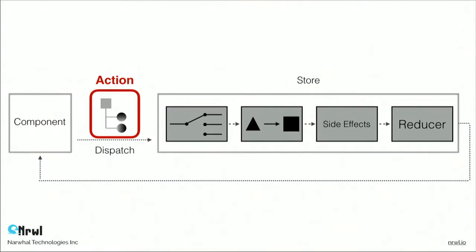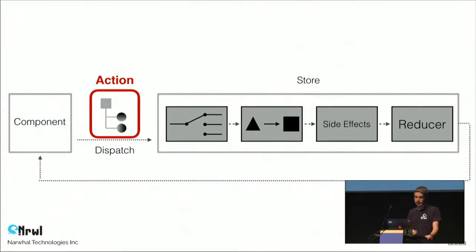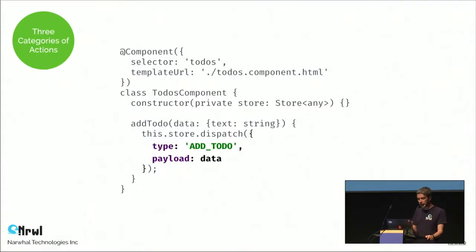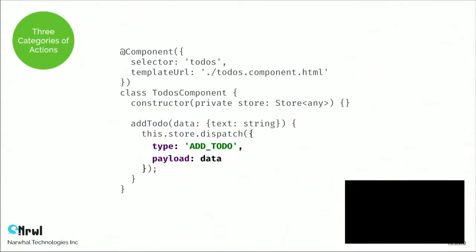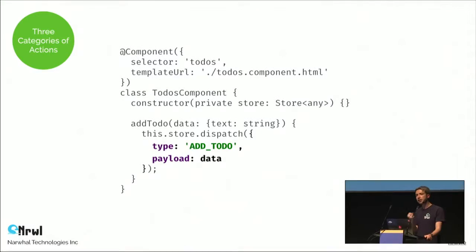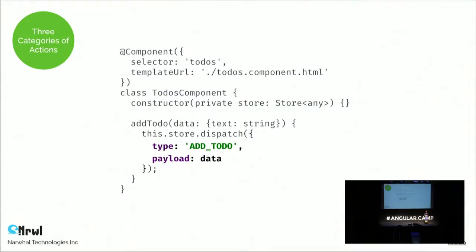An action is what we dispatch when we want to express our intent — it's essentially a message. In NGRX, an action has two parts: the type, which is just a string, and the payload, which is some extra information needed to process the action. As with most messaging systems, actions in NGRX are reified — they are represented as concrete objects we can pass around and store. NGRX doesn't impose many constraints on your actions; it doesn't care how you define types or payloads, or how you construct actions. You can construct them inline or extract the construction into a factory function.